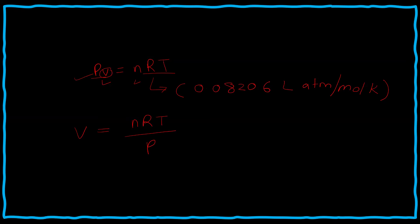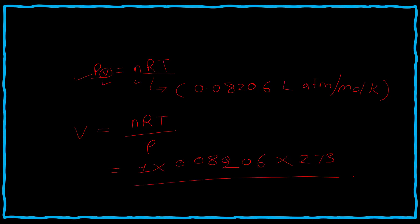In our case, we can take one mole of gas, so the value of N will be 1. Then we multiply with the gas constant 0.08206, multiplied by temperature in Kelvin, and divide by atmospheric pressure, which is 1. After calculation, we will get a volume of 22.4 liters. So simply, at STP, one mole of gas occupies 22.4 liters.